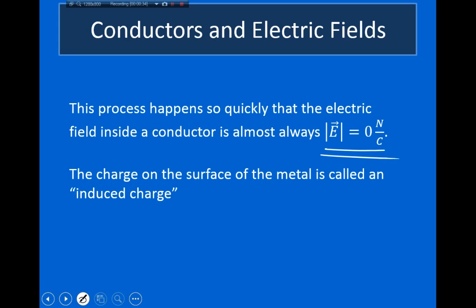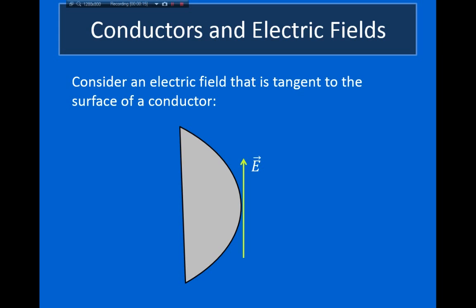So I've explained what happens to the electric field inside a conductor, but we can also say a little bit about the electric field immediately outside of the conductor. If I have an electric field which is tangent to the surface of a metal, the electrons inside this metal are going to experience a force due to this electric field. Negative charges will build up on one side and positive charges will build up on the other side, and these charges will create an electric field of their own which will eventually cancel out the tangential electric field. So the electric field is going to bend due to these charges forming on the surface.